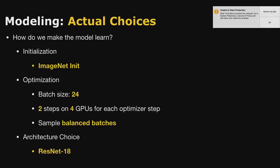Before going into how we made these choices, here's what we chose to give you context. We follow ImageNet initialization. We use a relatively large batch size of 24, achieved by taking four GPUs and accumulating gradients across a couple of backprop steps before doing an optimizer step. We sample balanced batches at training time. For backbone architecture, we use ResNet-18 - fairly standard.